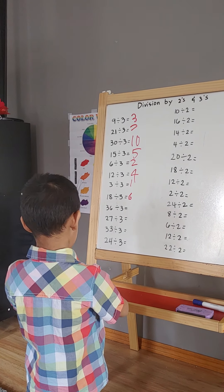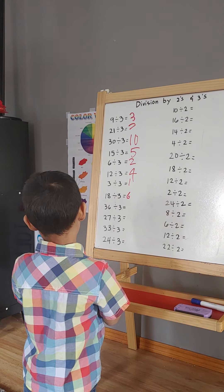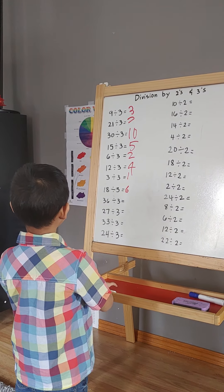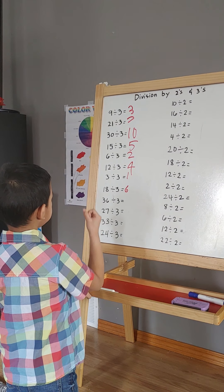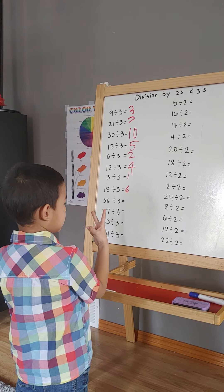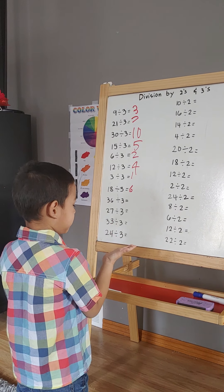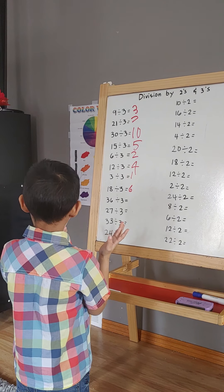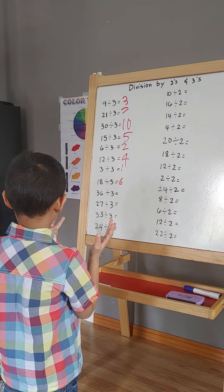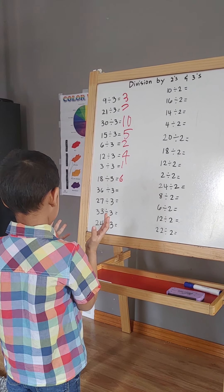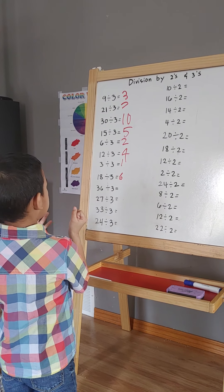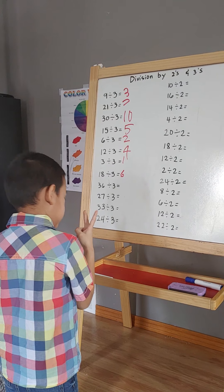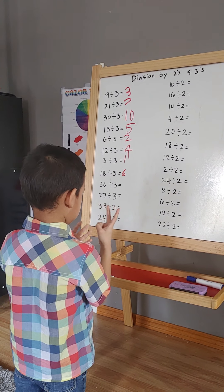Okay, 6 divided by 3. 3, 6, 9, 12, 15, 18, 21, 24, 27, 30, 33, 36. 12.